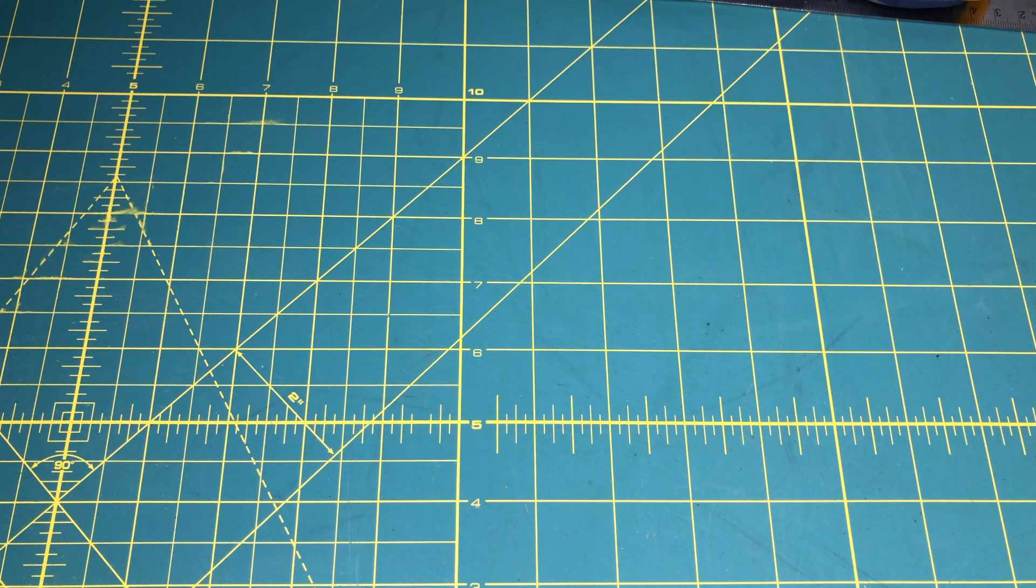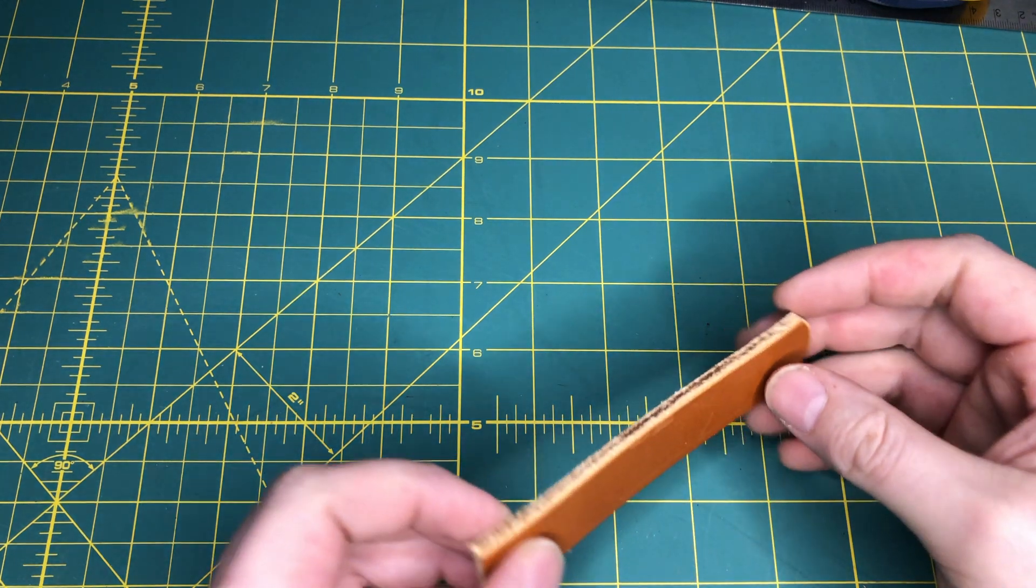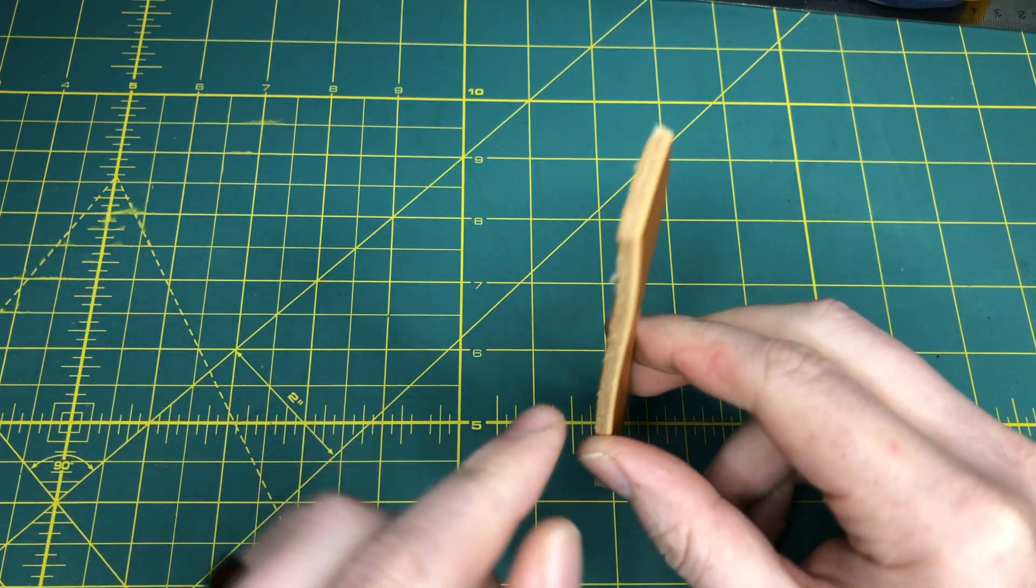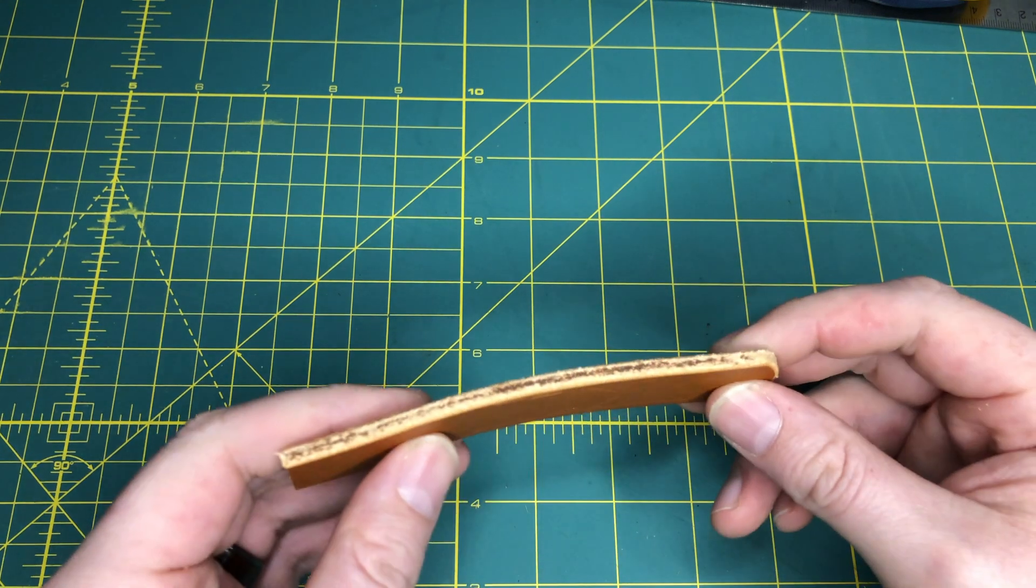Let's talk about burnishing. So we just did our edge beveling. We don't have a 90 degree edge anymore, which is good.